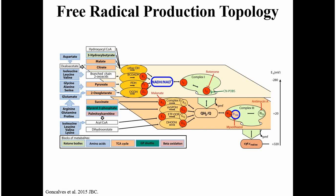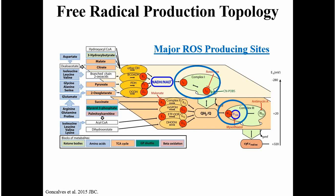I'll talk a little bit about what's known regarding free radical production by mitochondria. Here is a figure from Martin Brand's group that shows all the many possible sources of free radicals for mitochondria. These sources can consist of enzymes in the TCA cycle, enzymes in the beta-oxidation, or enzymes in the electron transport chain. What we know today is that Complex 1 and Complex 3 of the electron transfer chain are the major sites of ROS production. But in order to understand how and when mitochondria produce ROS, we must understand the mechanisms of ROS production.